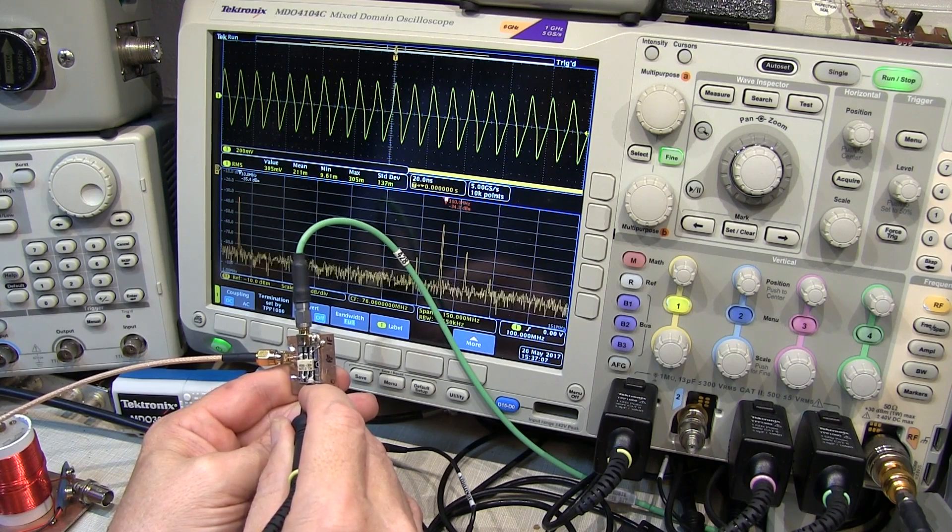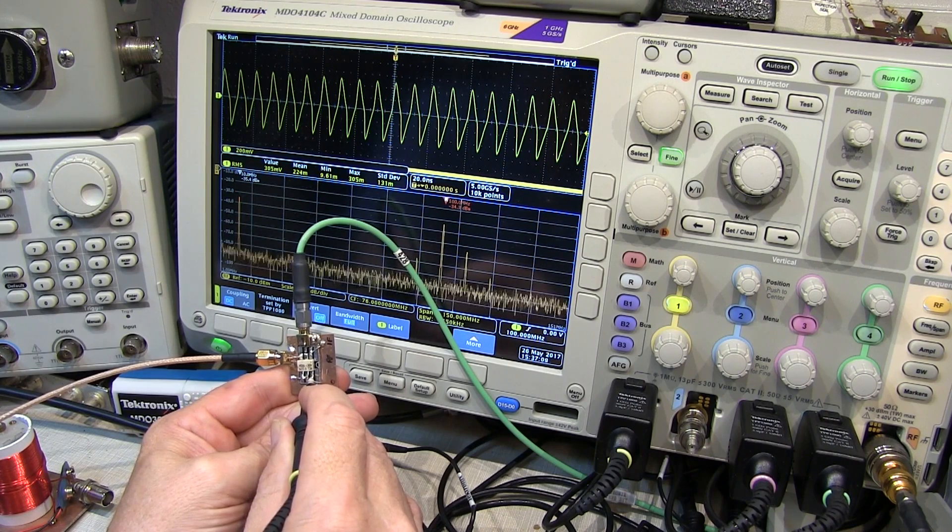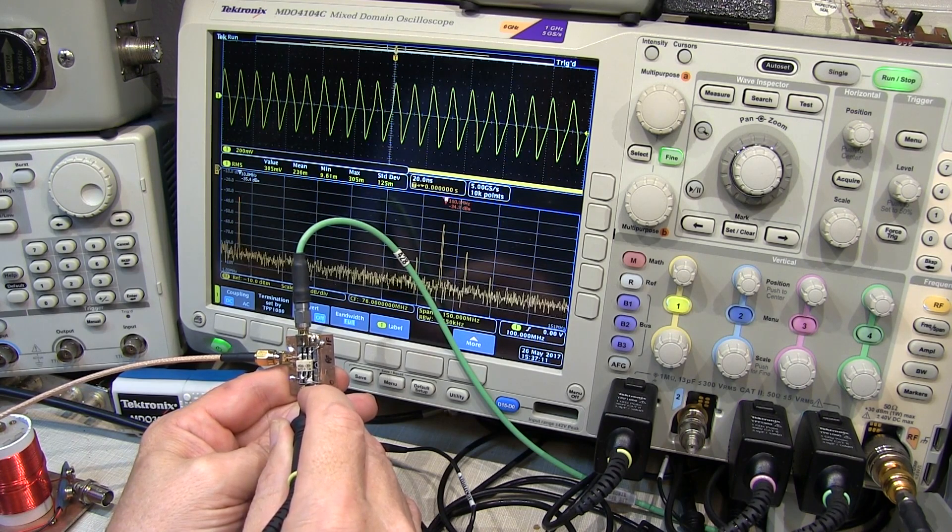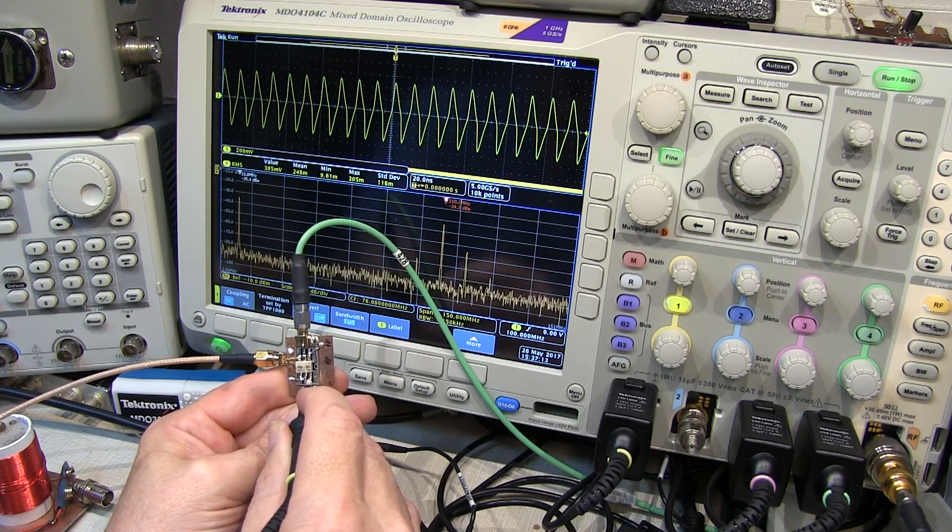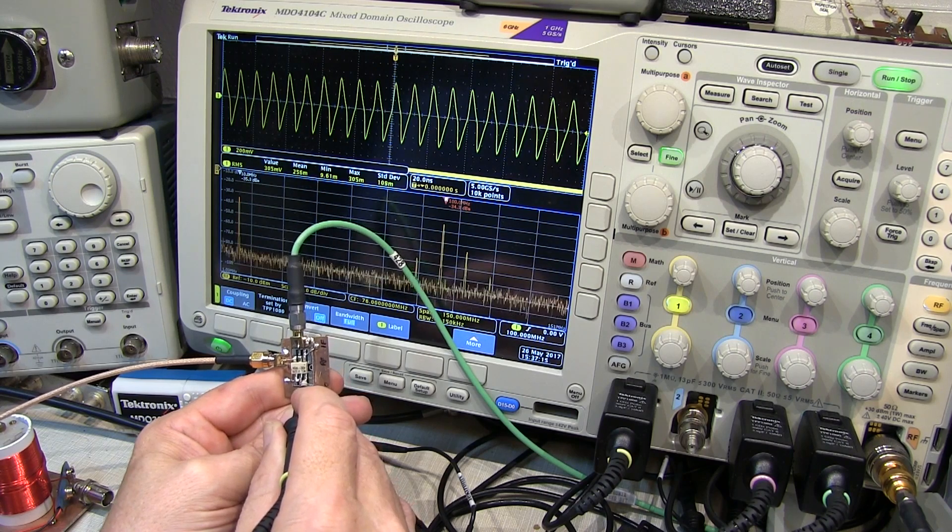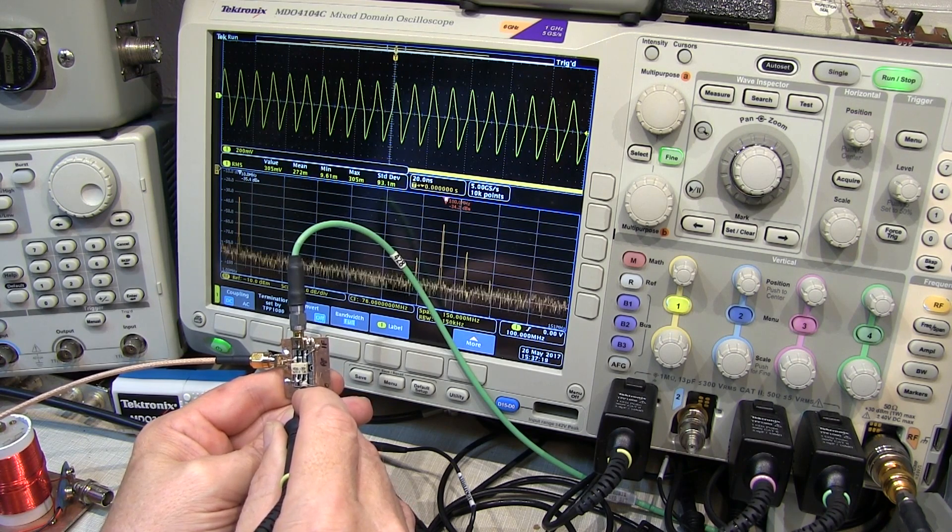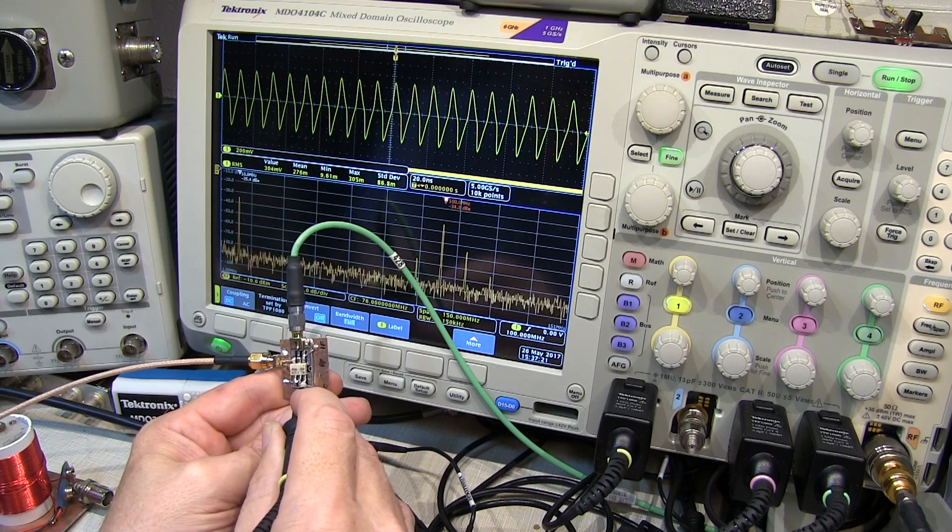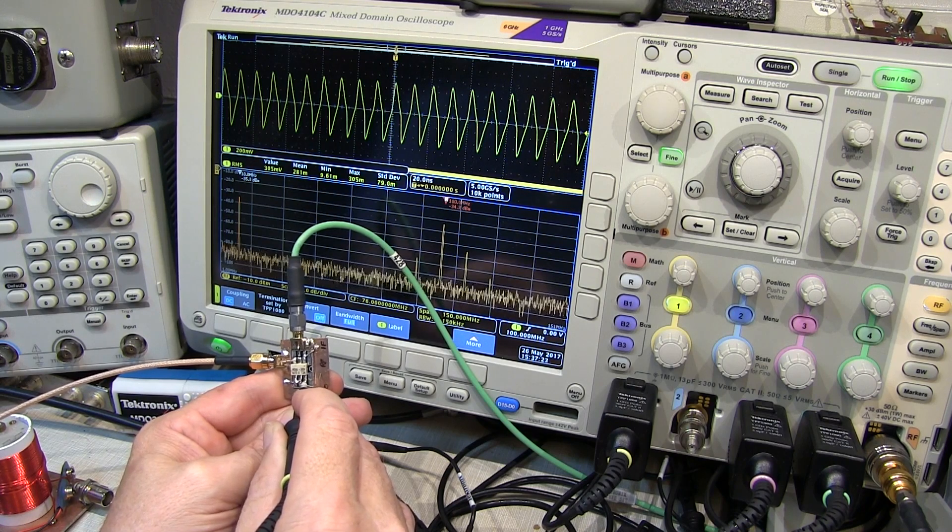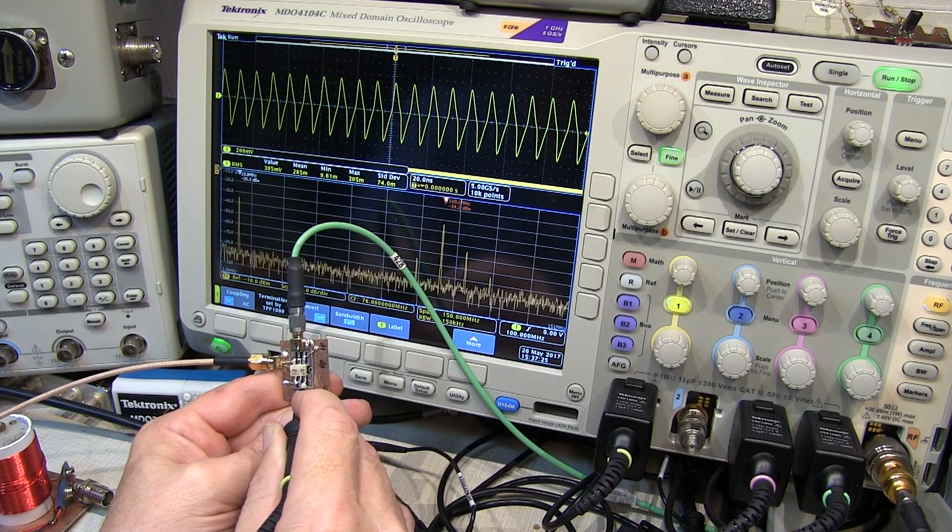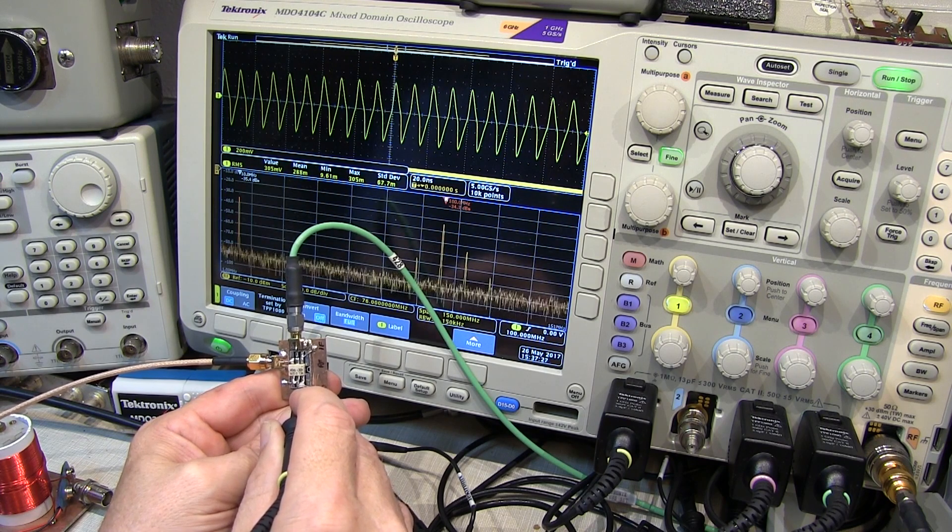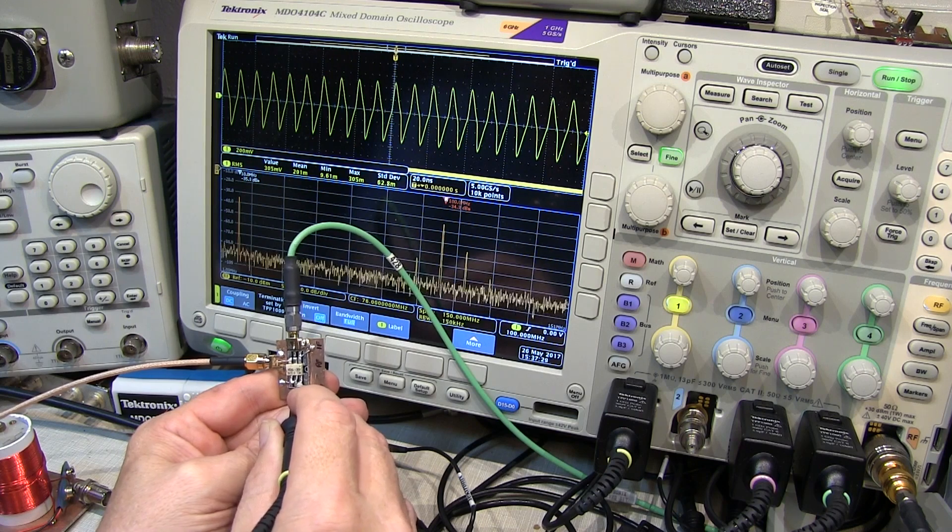So, as you commutate the diodes, the impedance changes, and that's going to change the waveform. So, that's to be expected. Now, if we look at the RMS value and the measurement over here on the scope, it's showing about 305 millivolts. Now, a plus 7 dBm signal would normally be about 500 millivolts RMS into 50 ohms. So, we're not seeing what you'd expect, but this is really what happens.